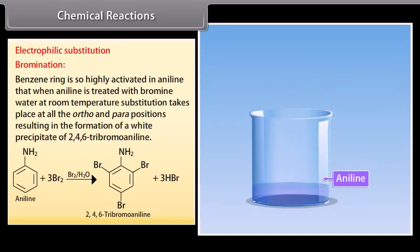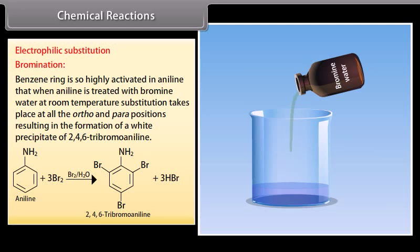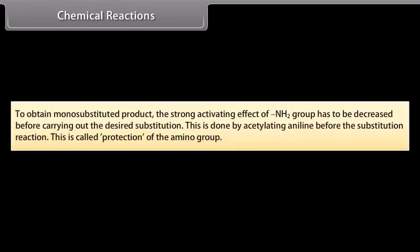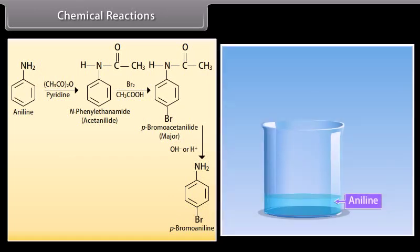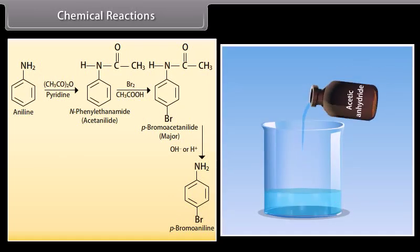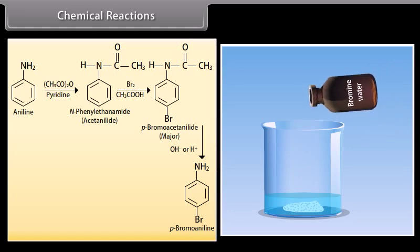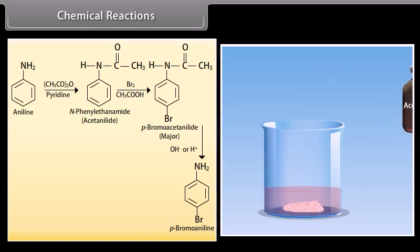Electrophilic substitution — Bromination: The benzene ring in aniline is so highly activated that treating aniline with bromine water at room temperature gives substitution at all ortho and para positions, forming a white precipitate of 2,4,6-tribromoaniline. To obtain a monosubstituted product, the activating effect of the NH₂ group must be reduced by acetylating aniline first (protection of the amino group), then brominating to give p-bromoacetanilide, followed by hydrolysis to give p-bromoaniline.